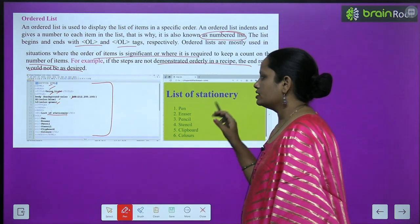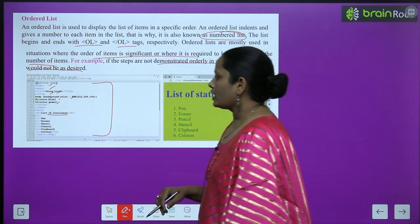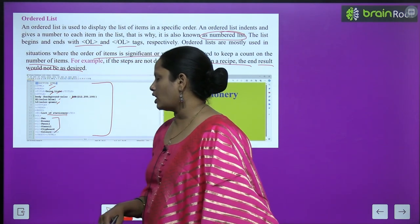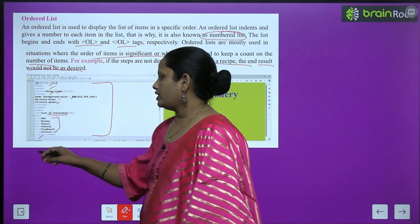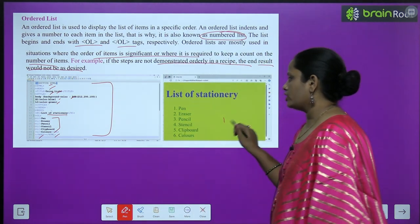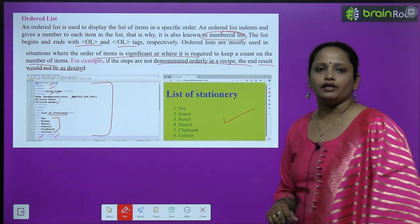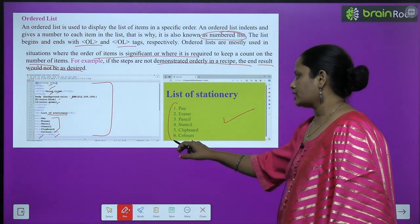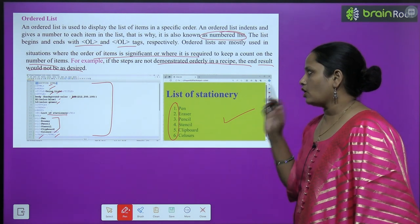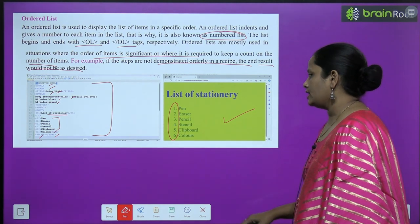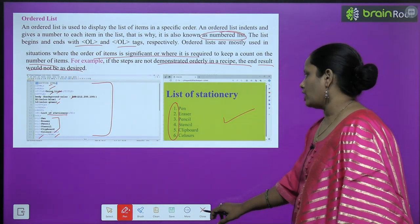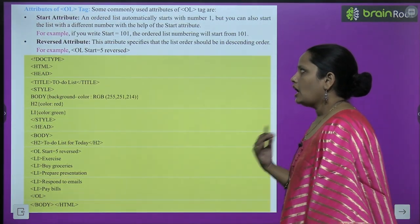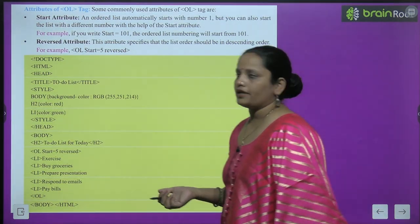Then we close the style tag and head tag, open the body tag, write 'List of Stationary' which will appear as highlighted words, and then add the list items: pen, eraser, pencil, stencil, clipboard, color. Close body tag and html tag. The list appears and you can see that since it was an ordered list, numbers are visible next to each item. Now come the attributes of OL tags. The commonly used attributes are: start attribute and reverse attribute.